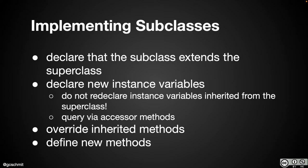Visibility still matters — private still means private. If our superclass has a private instance variable, the subclass cannot directly access it. In our subclasses we have to use accessor methods to get and set those variables. We inherit all the methods, but we might need to change the behavior of one or more of them — that's called overriding, which I'll explain in a moment. There might also be entirely new methods to add. These are the four steps we go through when creating a subclass.